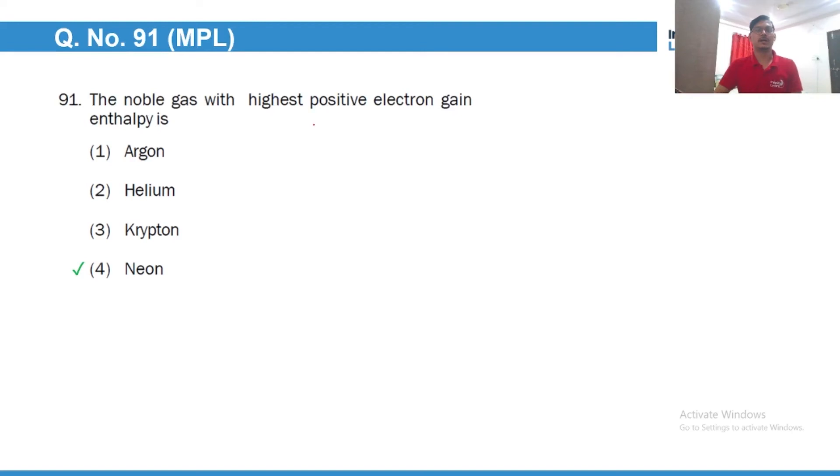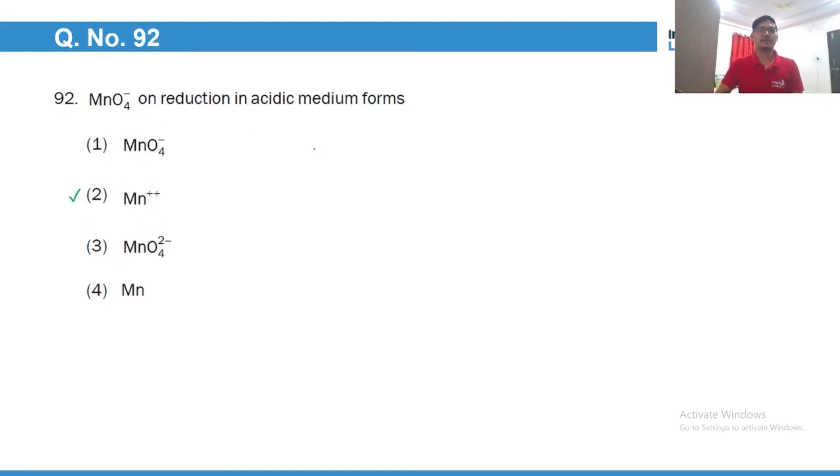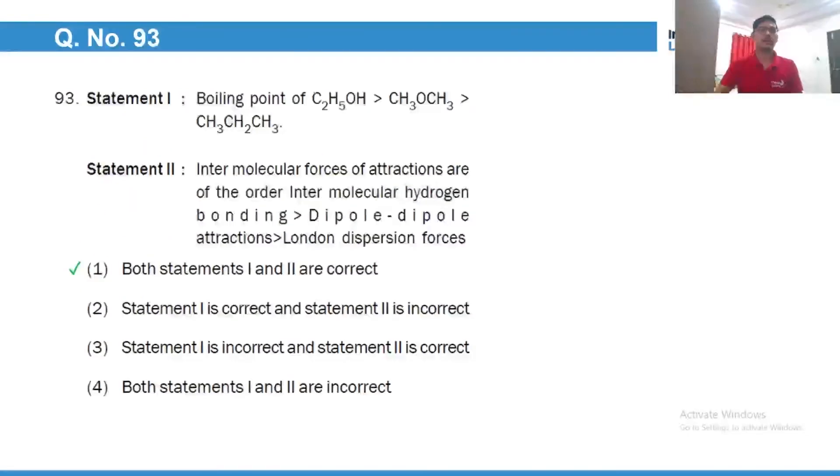Noble gas with the highest positive electron enthalpy is neon. MnO4 minus on reduction in acidic medium gives Mn2 plus and n factor is 5. Boiling point is correct and yes hydrogen bonding, then dipole-dipole forces and dispersion forces. So both the statements are correct.